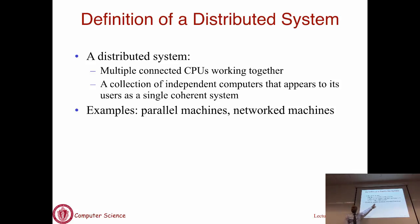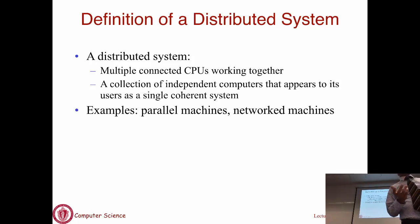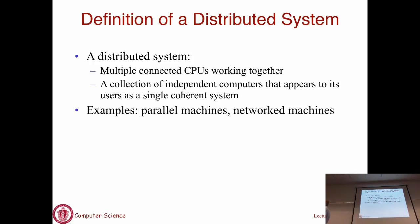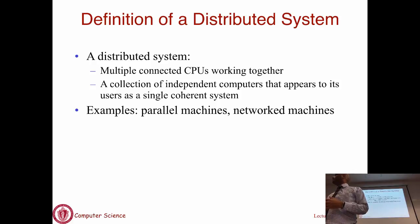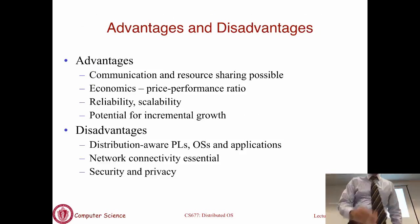Everything from parallel machines to network systems is covered by this definition. Parallel machines are tightly coupled systems with more than one processor; the interconnect is a high-speed system bus and all nodes are inside one box. At the other end, you may have laptops or other machines communicating over some network. It's a broad definition encompassing high-end parallel computing machines as well as machines loosely coupled using a network.